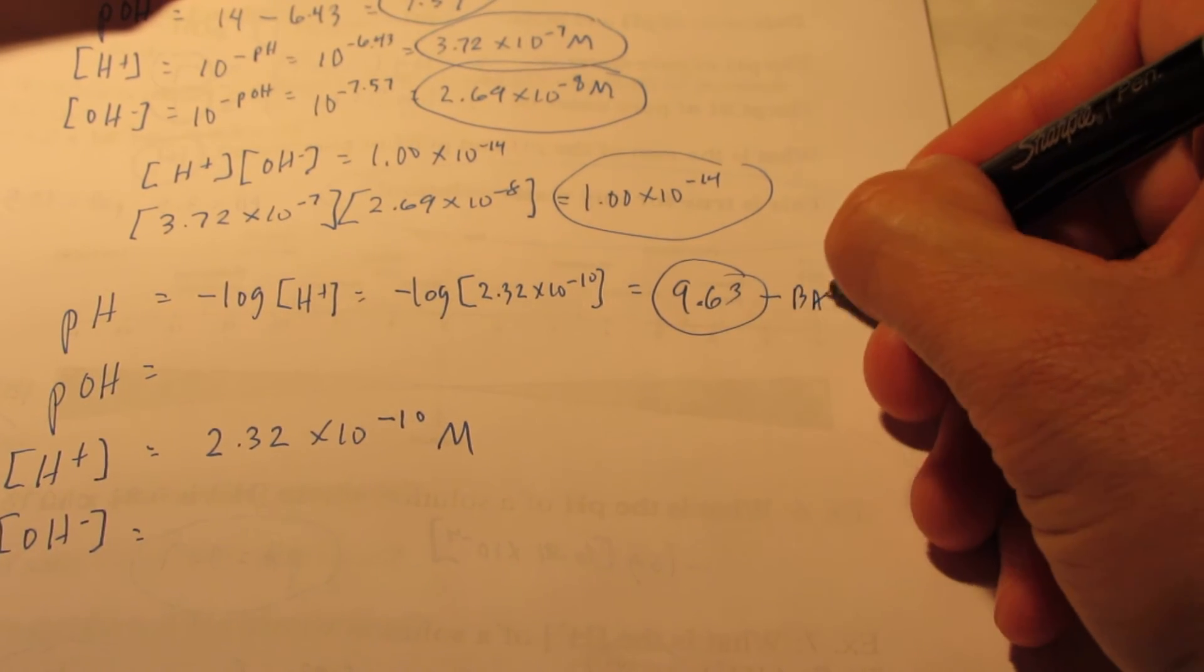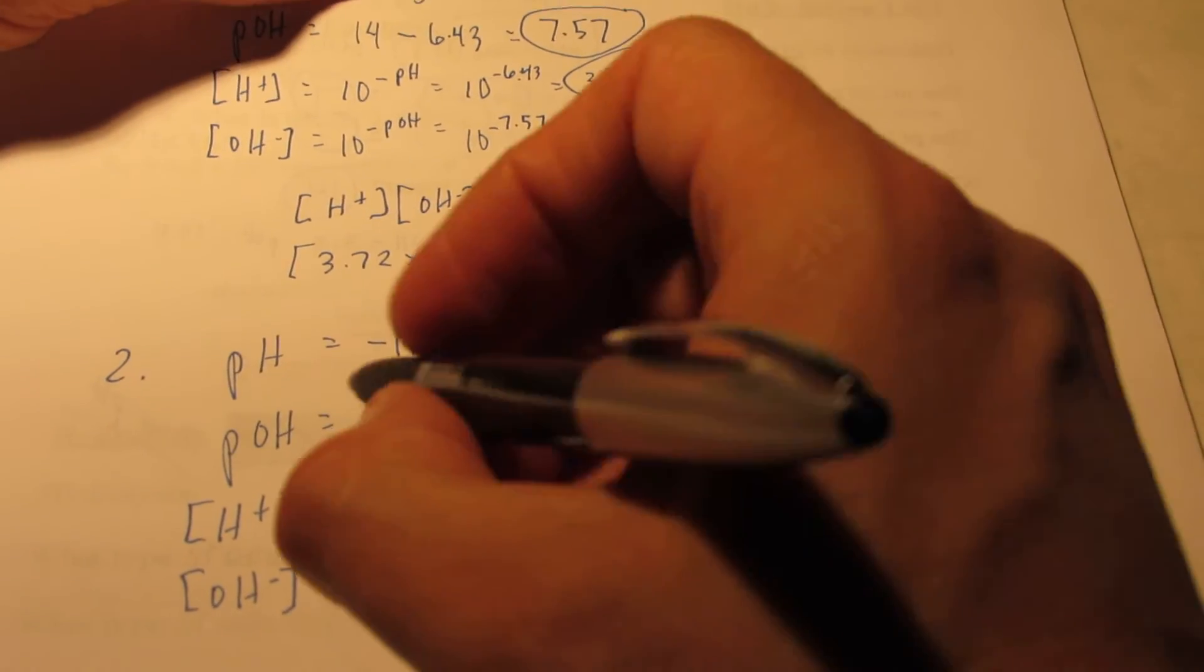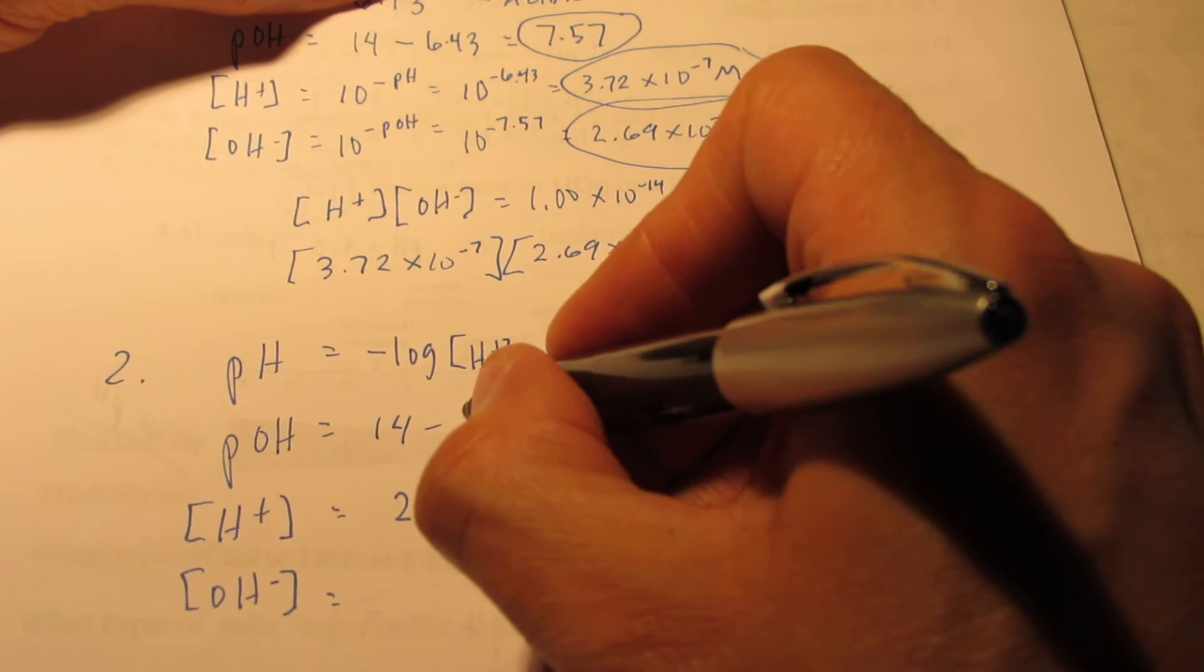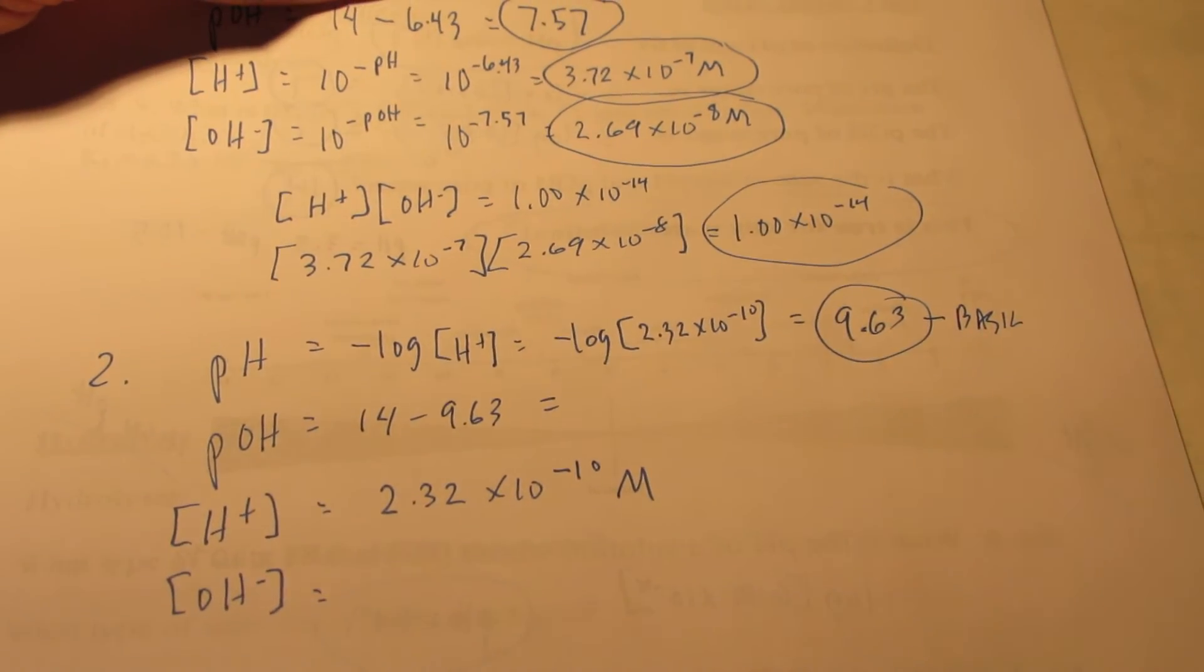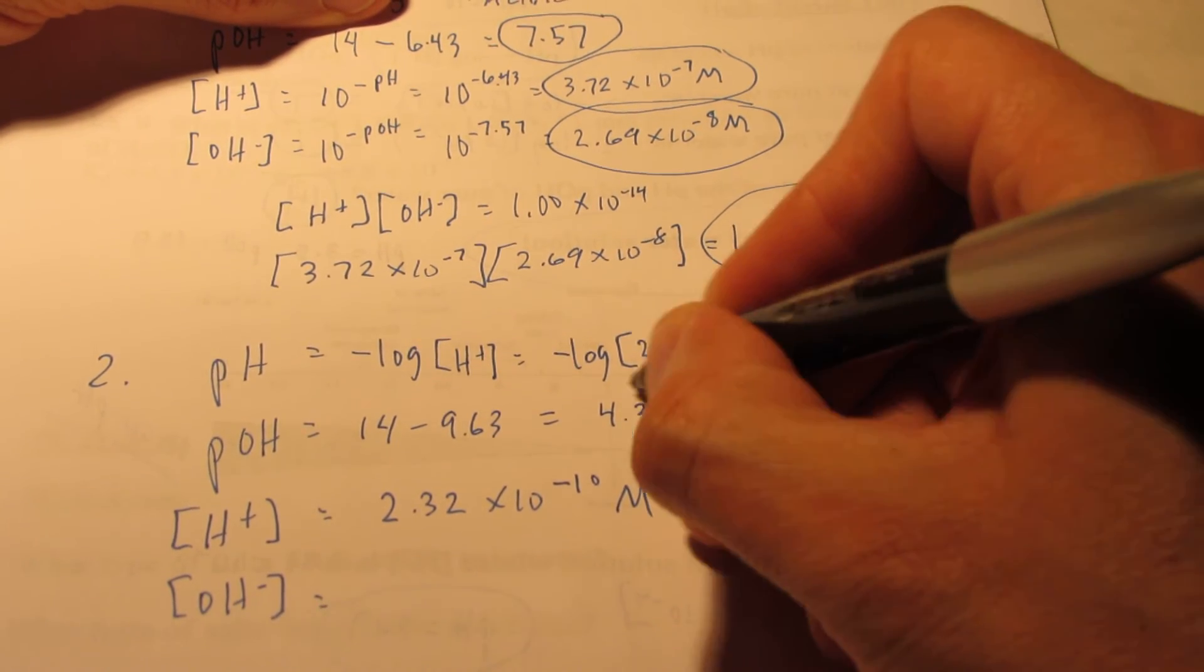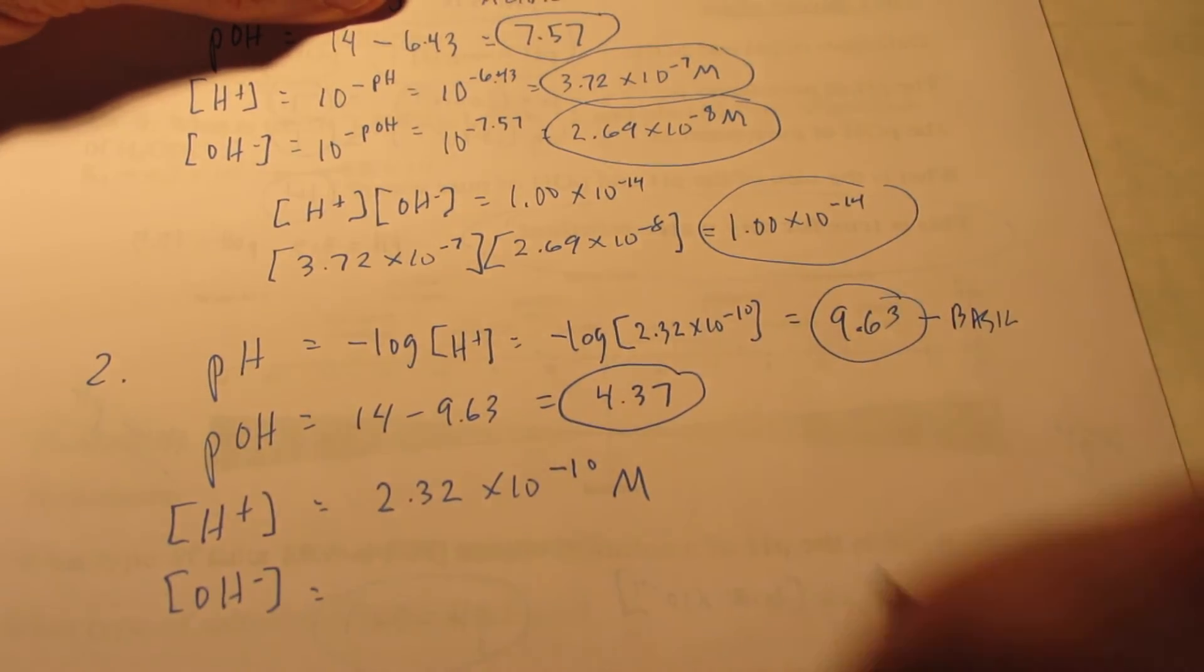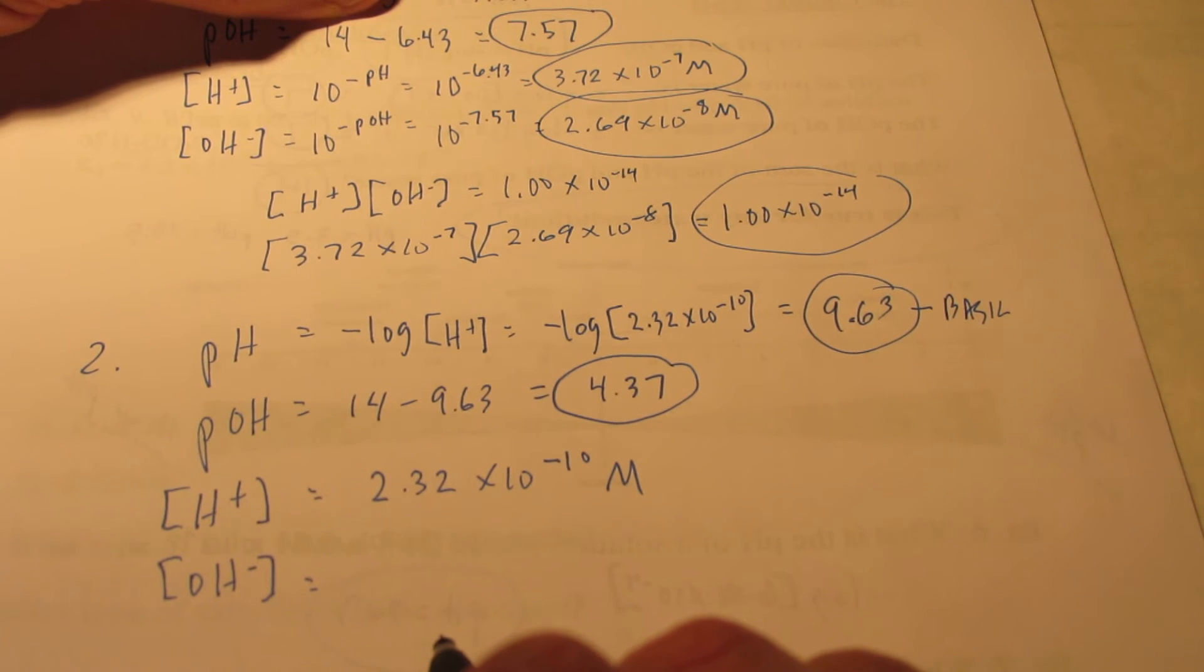So that pH is higher than 7, so we know that's basic. pOH, that's easy. 14 minus the pH, 9.63 should give us the pOH. So let's see, that would be 4.37, I believe. Alright, 9.63 plus 4.37 will get you to 14. That sounds reasonable.